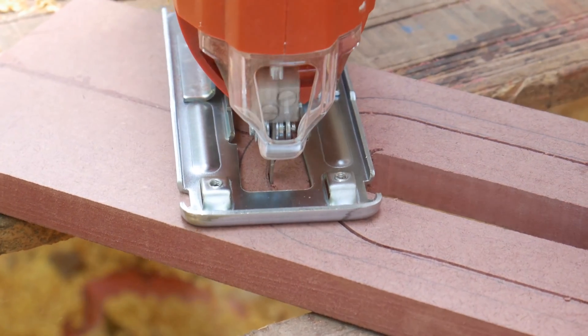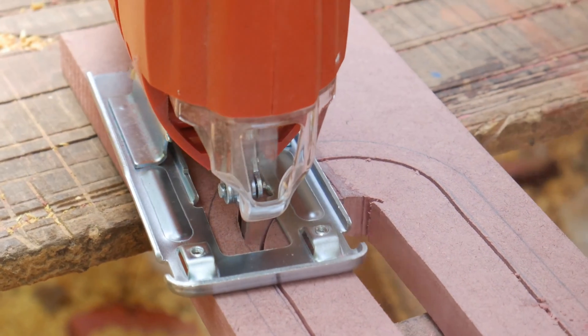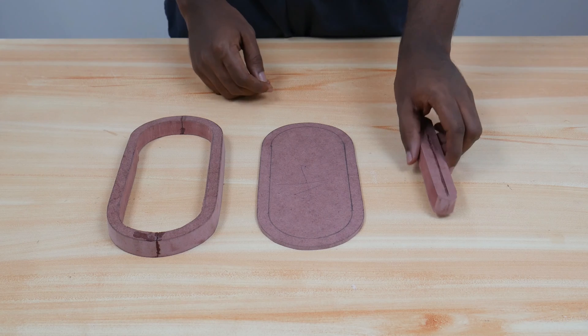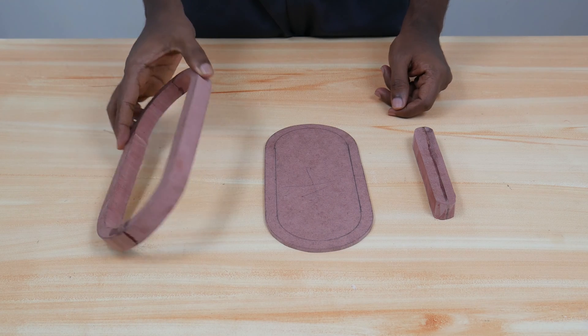Then we started cutting with the jigsaw. For the inside cut, we drill small holes for getting the job done. Finally we have our wood pieces. The cut is not very accurate; we will adjust it according to the diffusion panel.